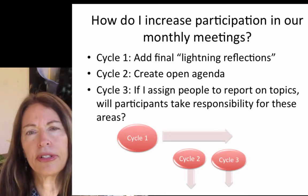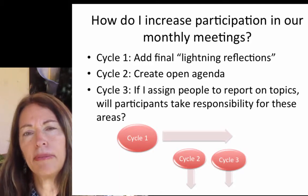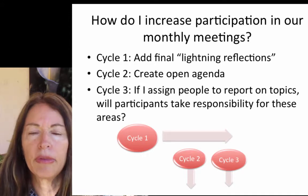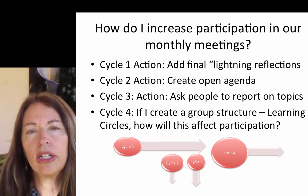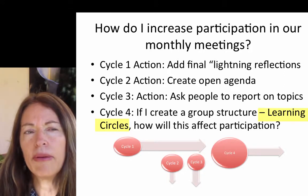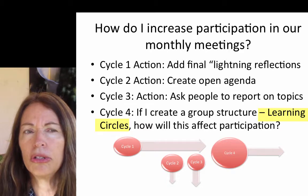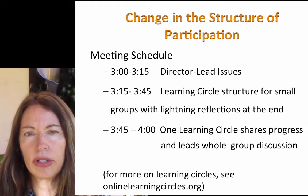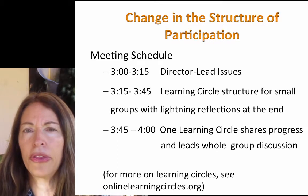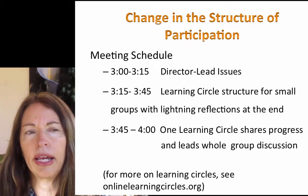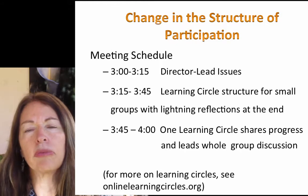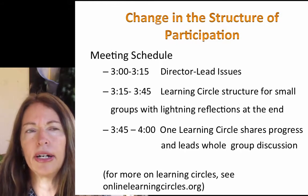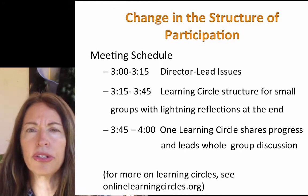So after some reflection and after talking to the people in the group and other action researchers, the director decides to change the structure of the way they work. He puts them in learning circles and the meeting now shifts — a good half of the time is spent working in learning circles, then one learning circle reports out their findings each month. Now the meeting is split between the director talking, group work, and a group reporting out, and that's seen as successful enough that the person wants to report out to others.